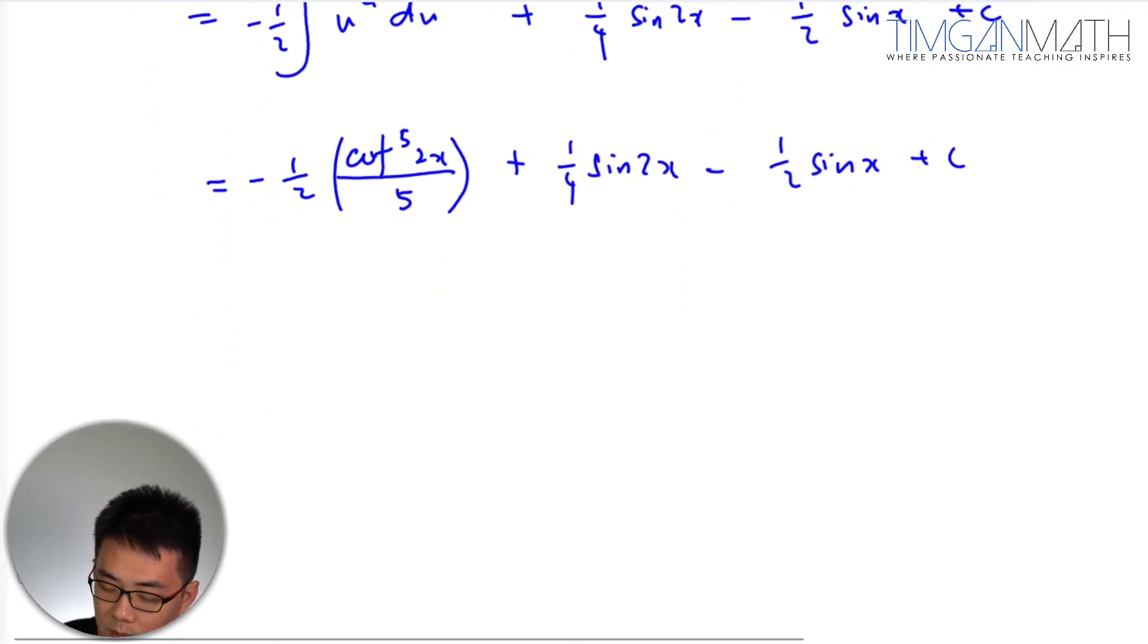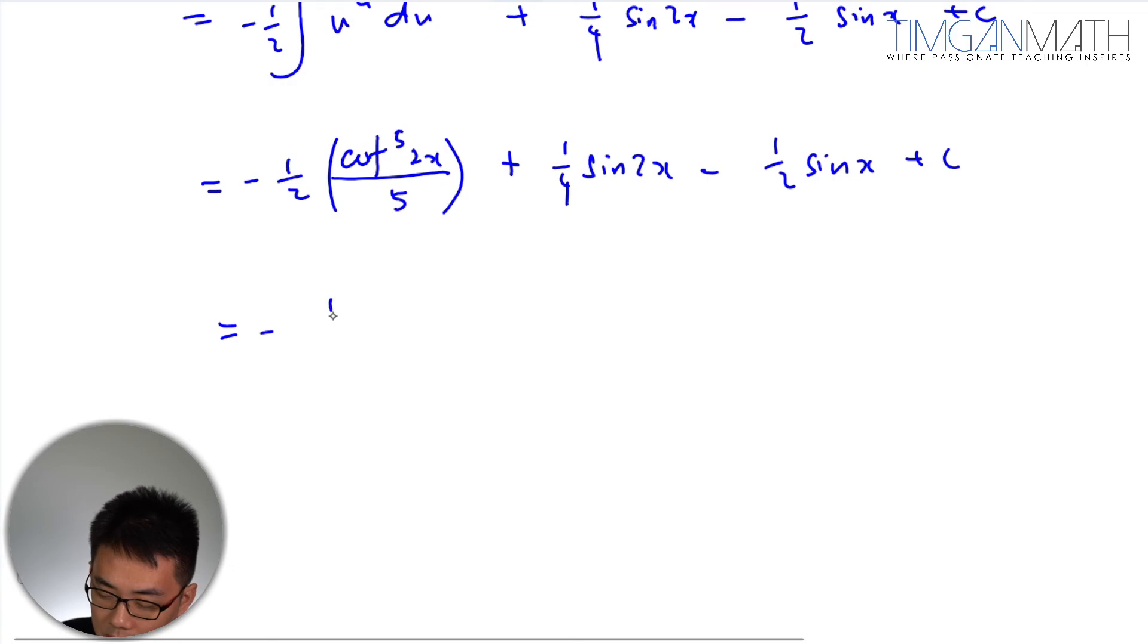So this case here we'll get is minus 1 over 10 cot 5, 2x plus 1 quarter sine 2x minus half sine x plus c.